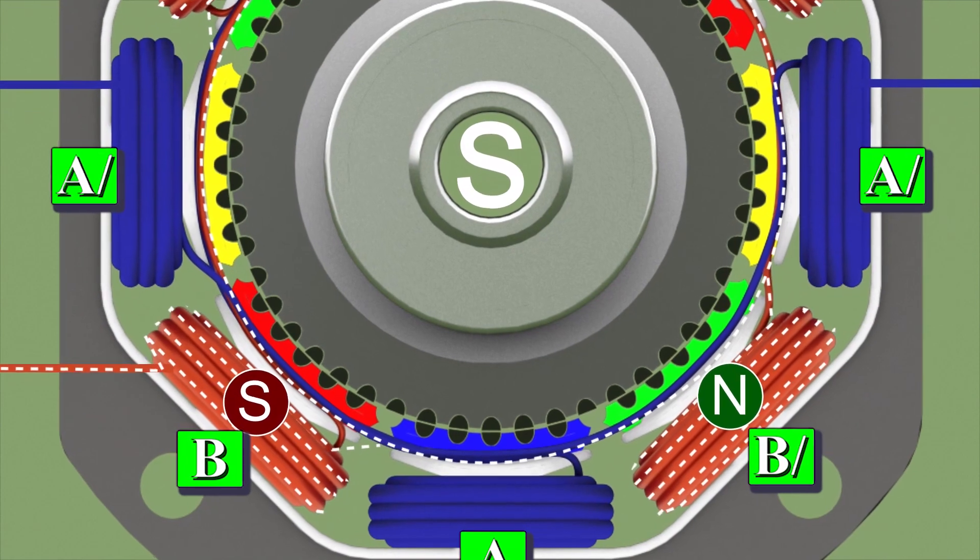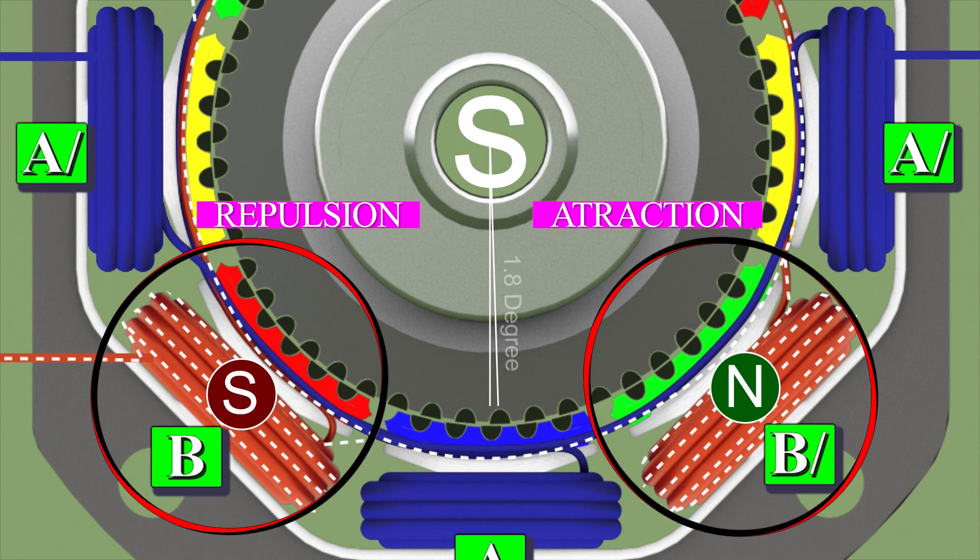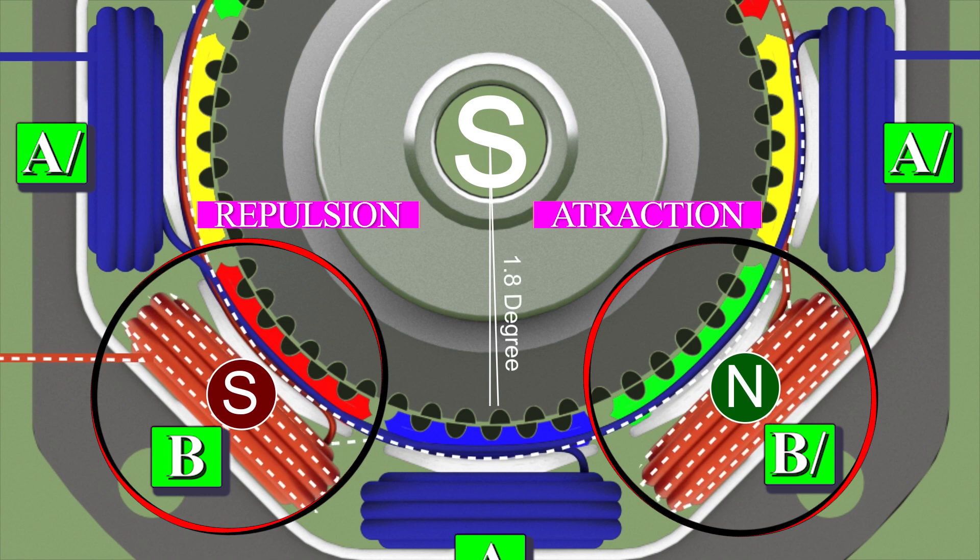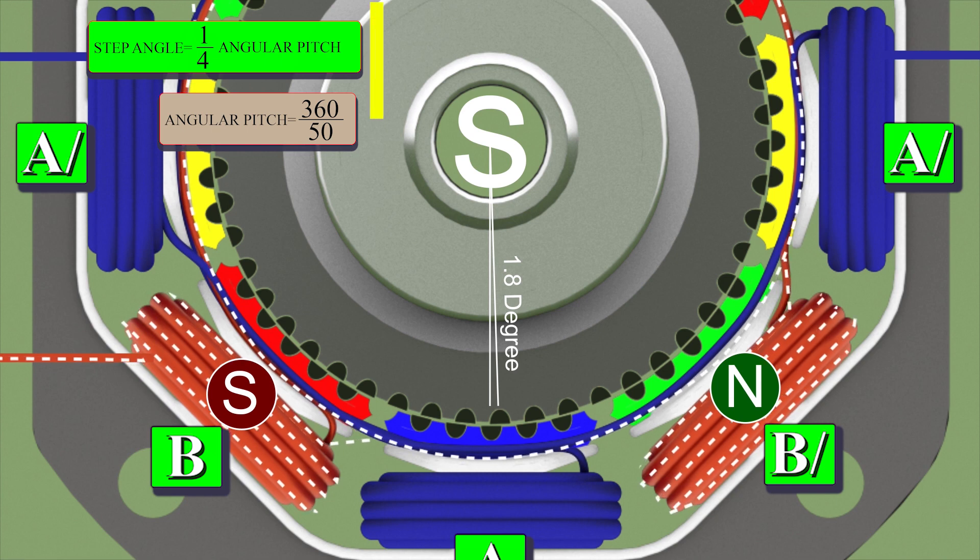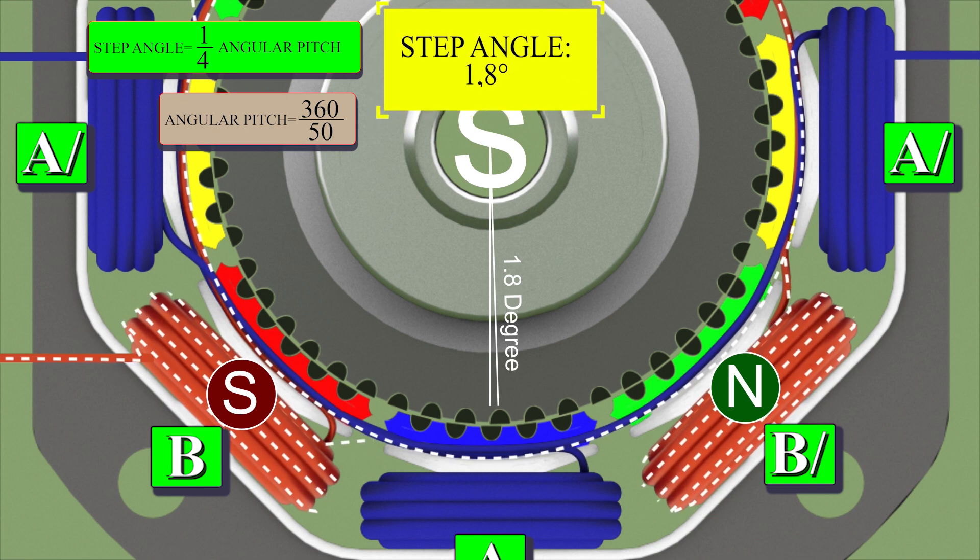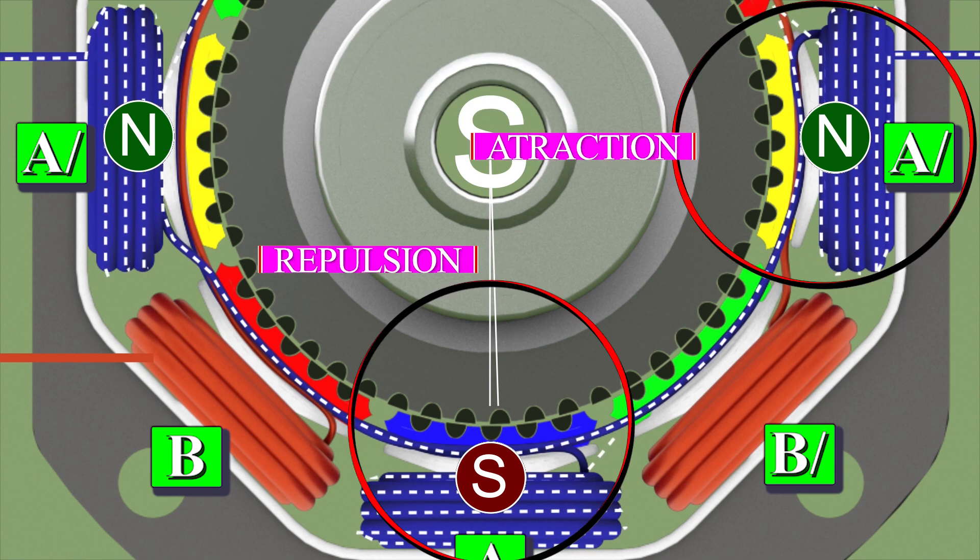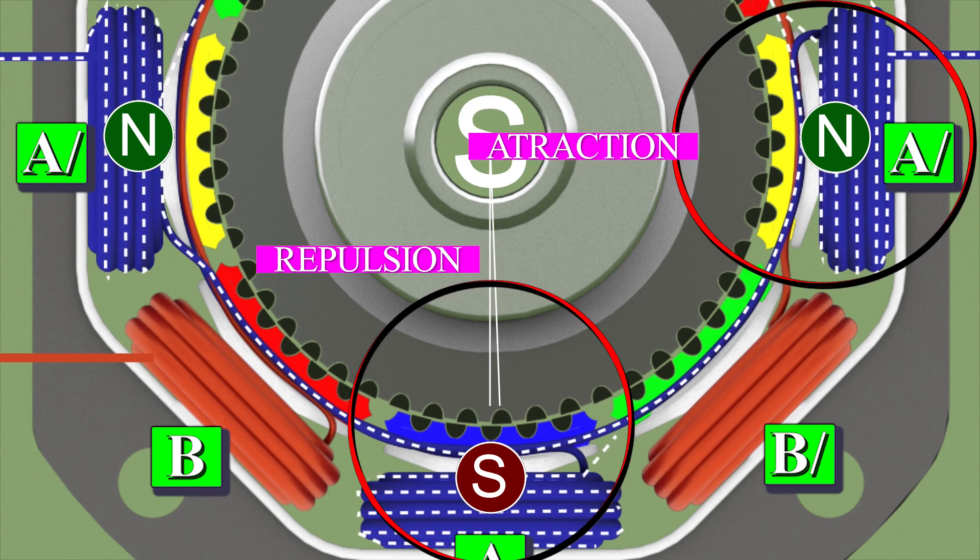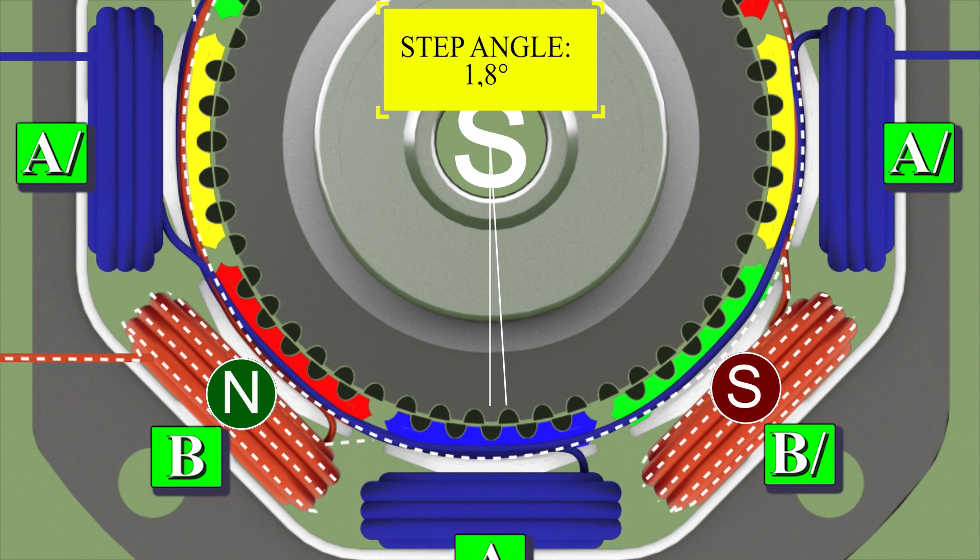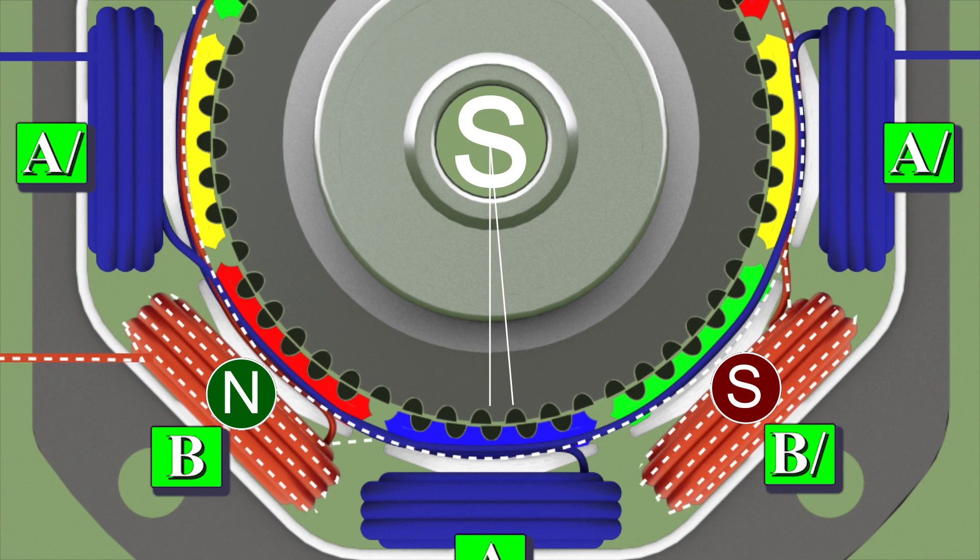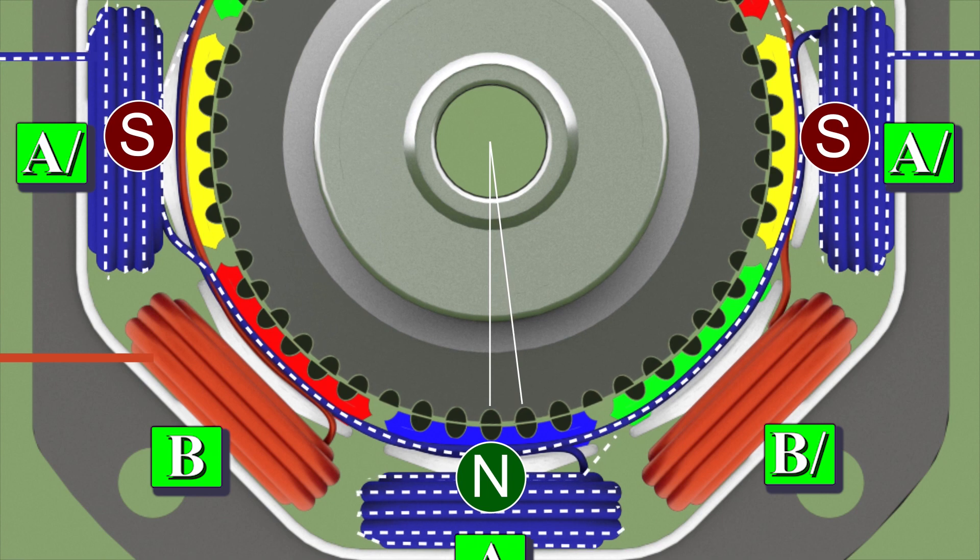When coil B is energized, you can see the rotor rotating by a small angle to align with the new north pole. This angle is one quarter of the angular pitch, so the rotor rotates by 1.8 degrees. Now we again energize set A with the opposite polarity. Again, the rotor rotates 1.8 degrees. When we repeat this process, we can achieve highly accurate motion of the motor. The step angle resolution can be further improved by half-stepping.